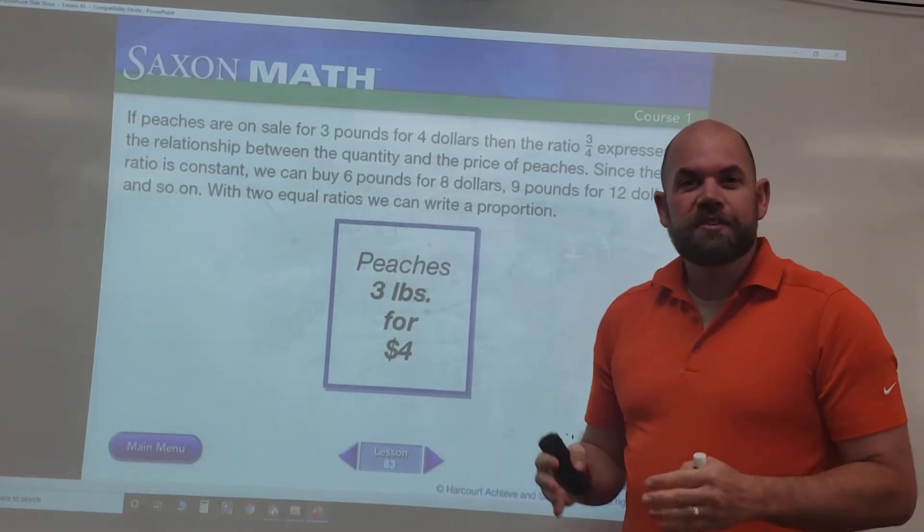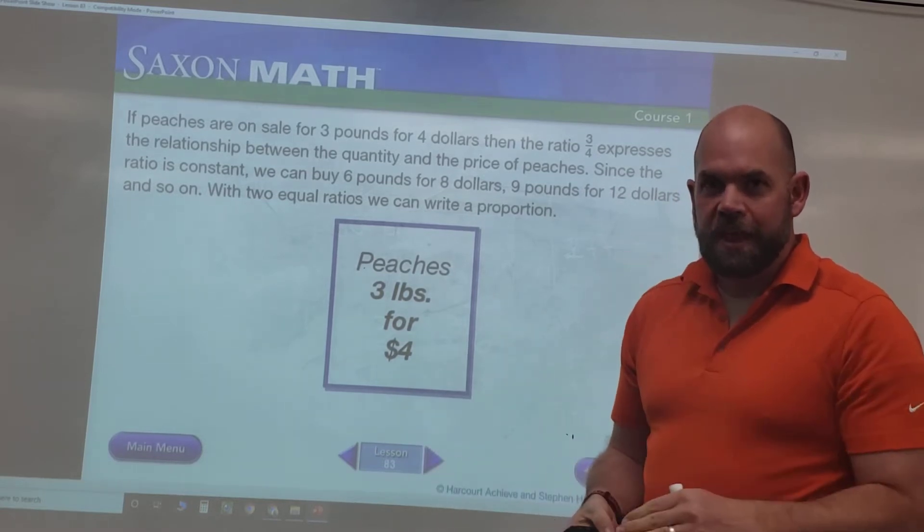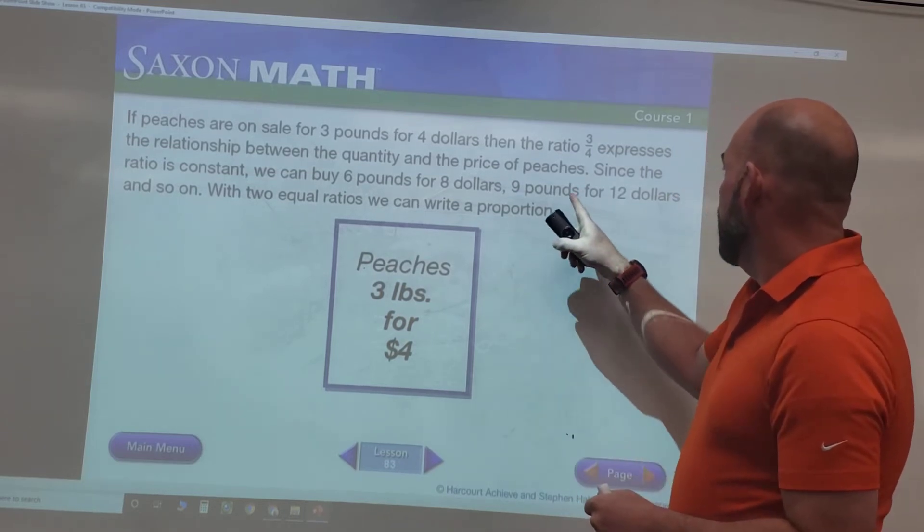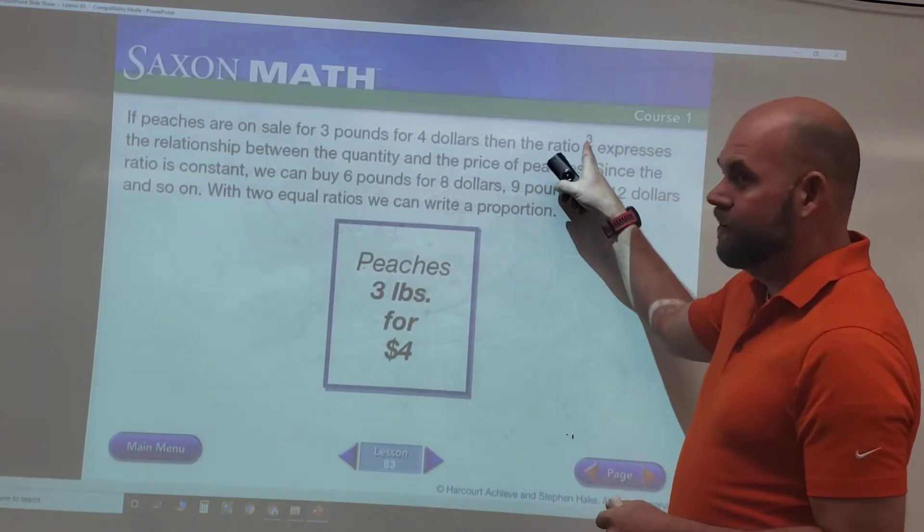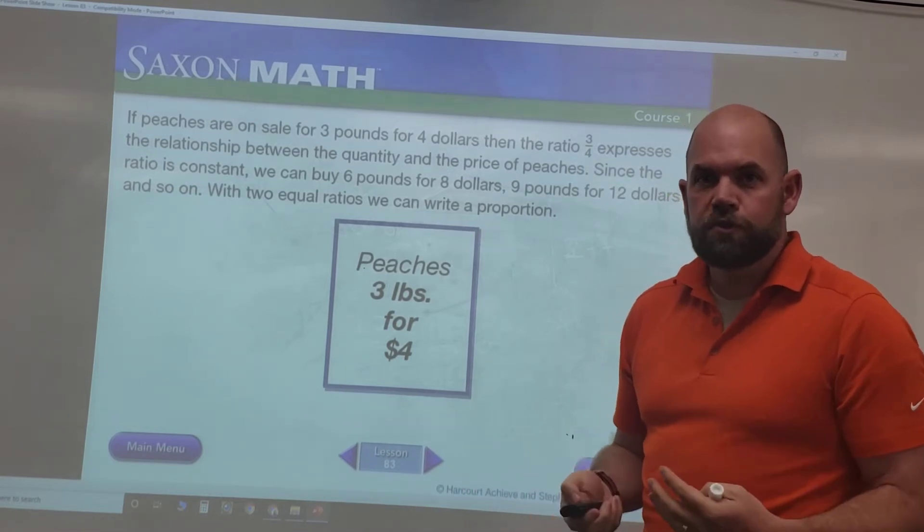You see how that ratio is constant, it's always the same. So they're going to equal each other. Nine over twelve is the same as three over four. We know that's true because you can reduce it and it will go to the same number.